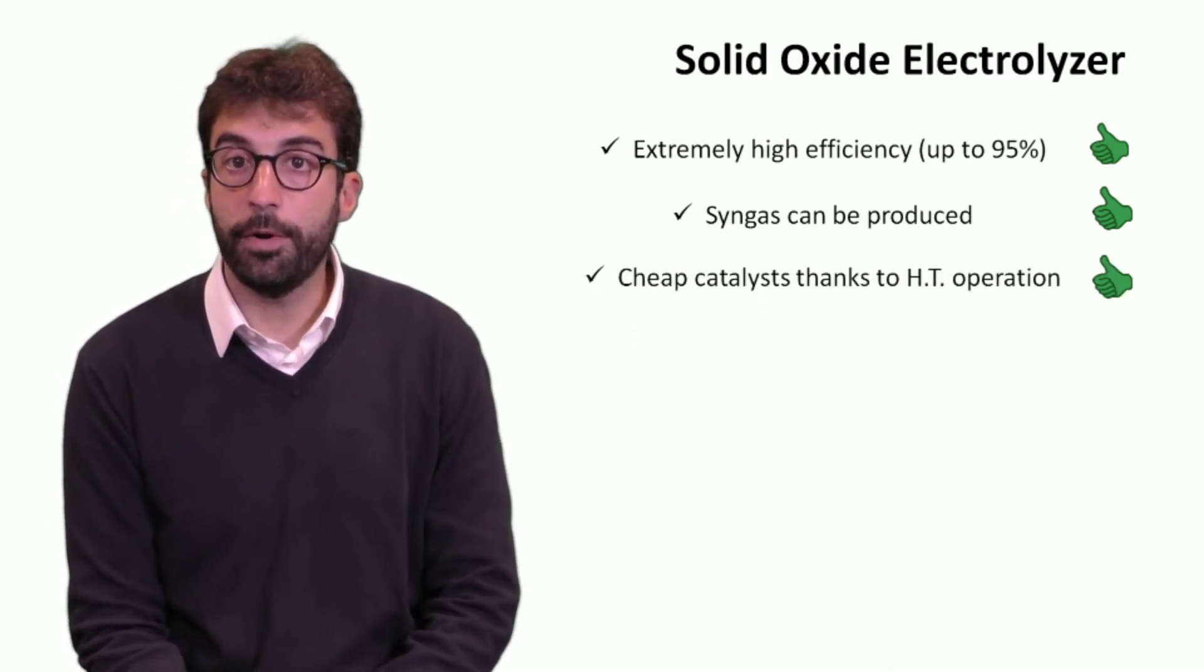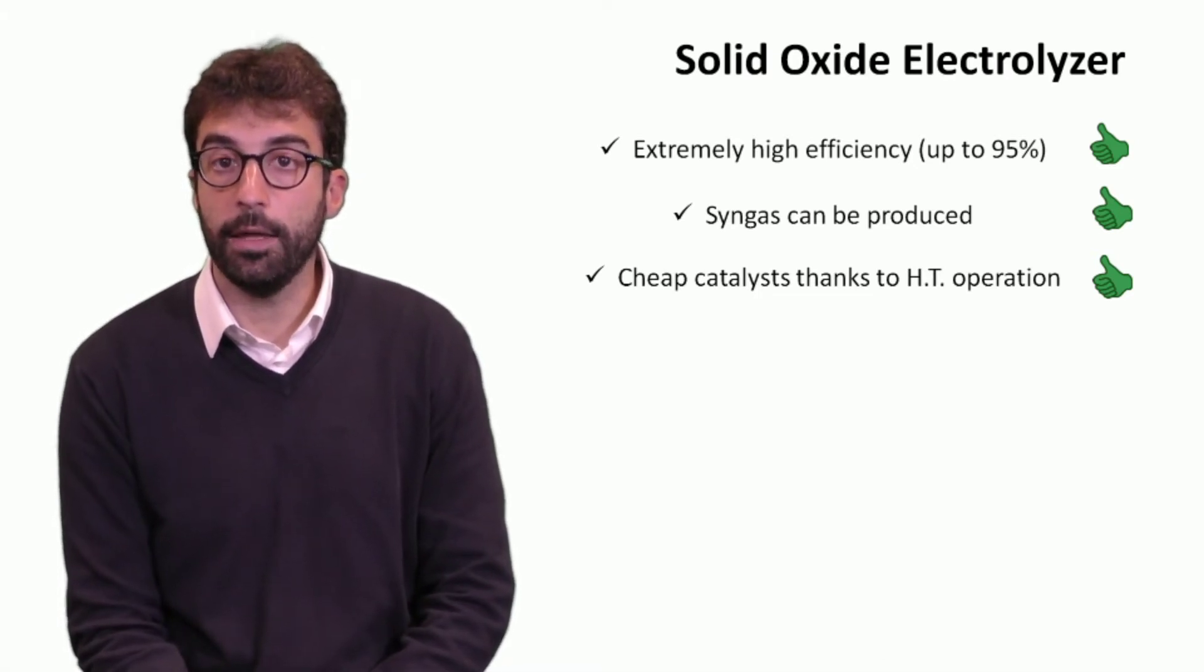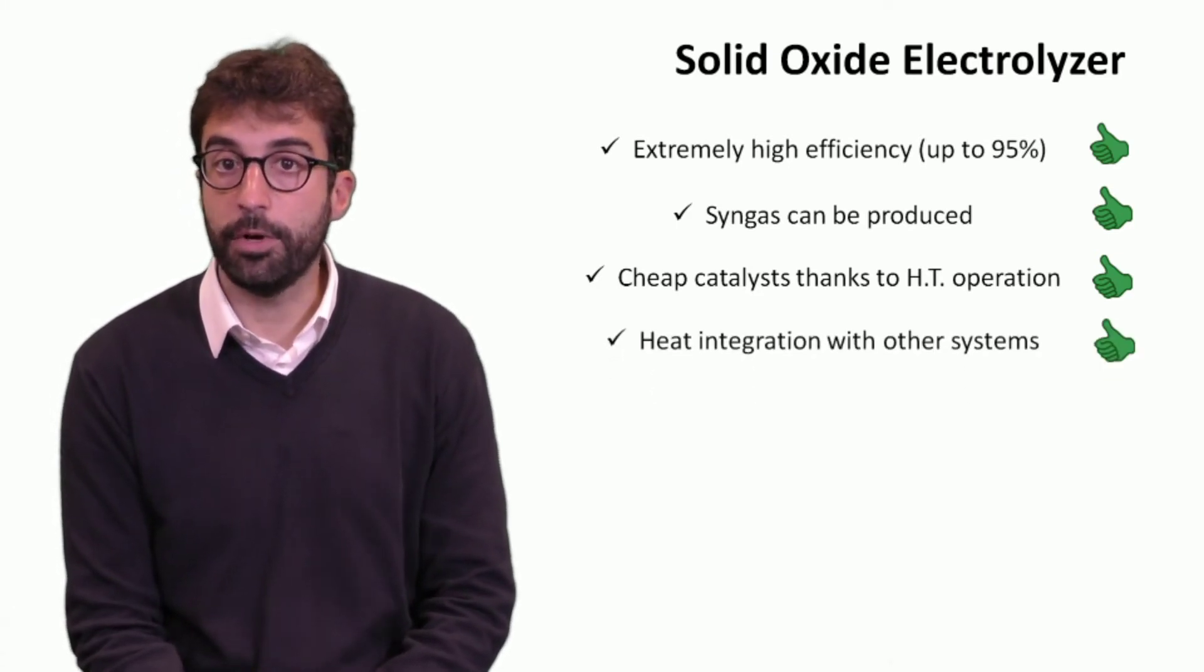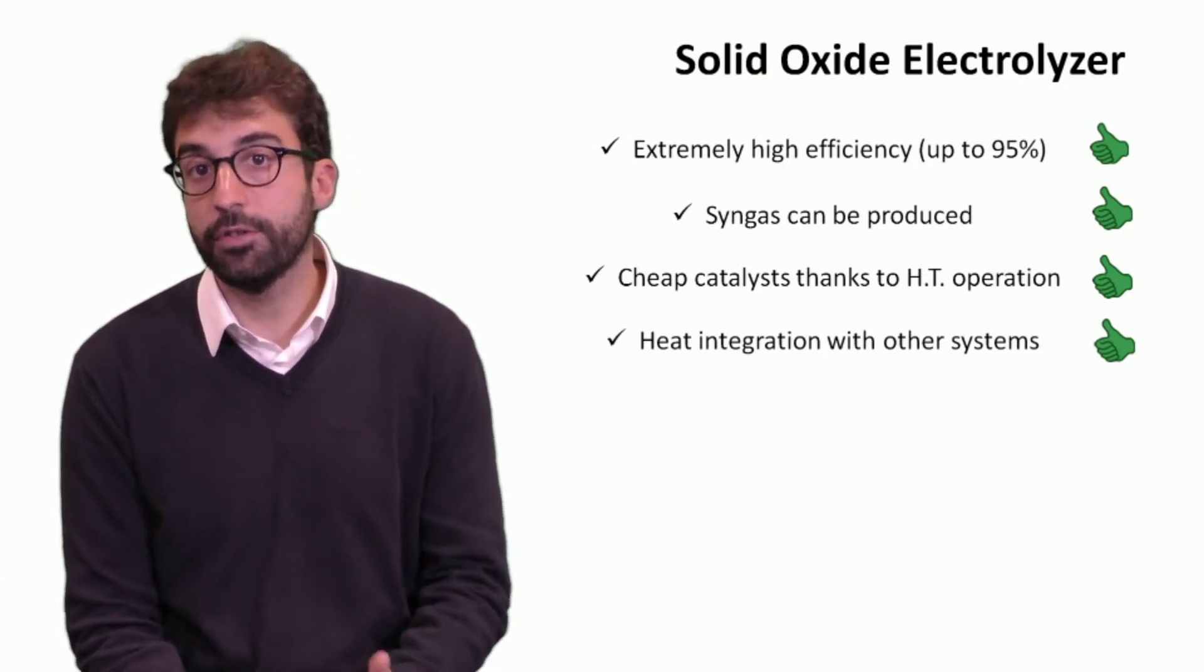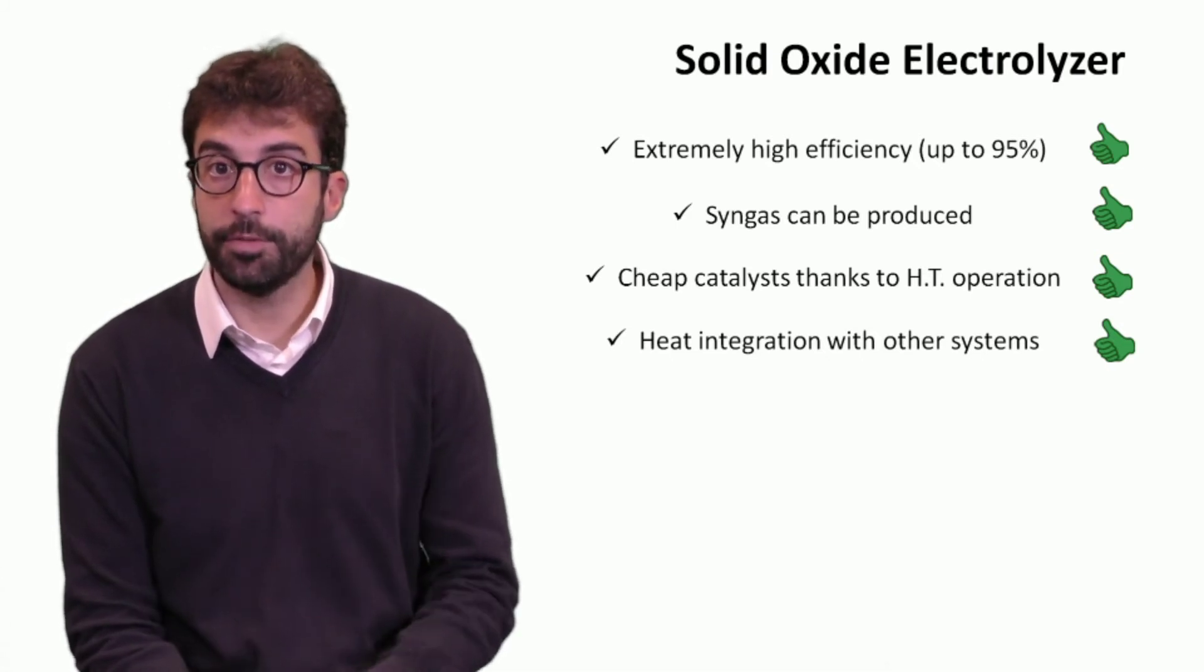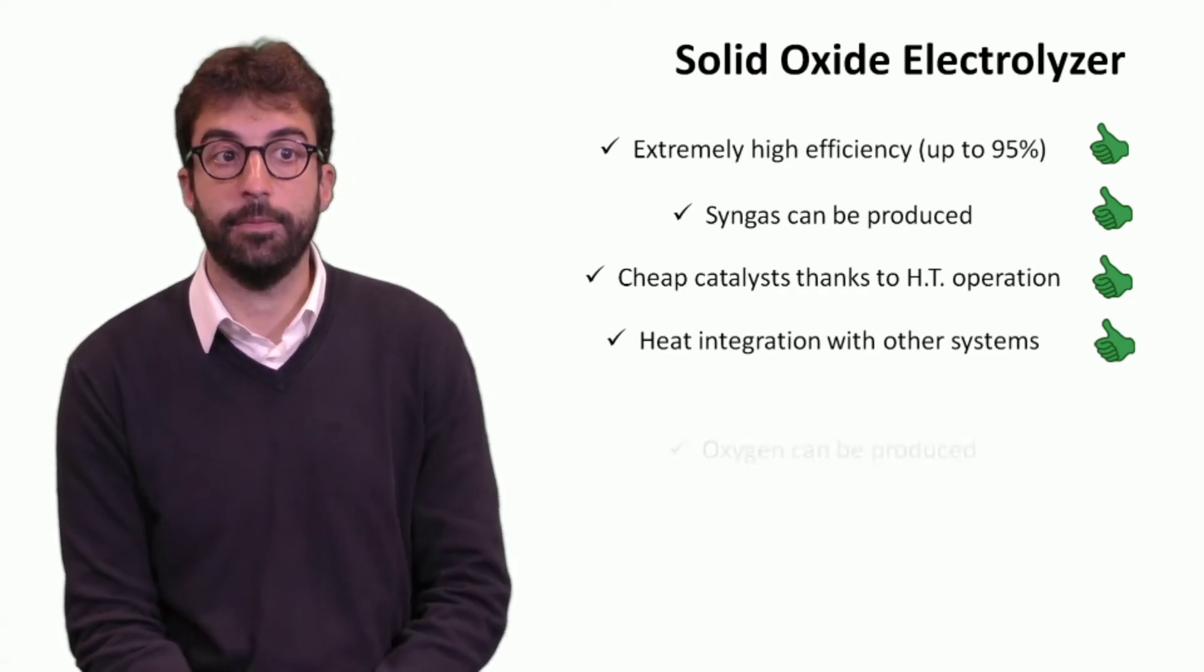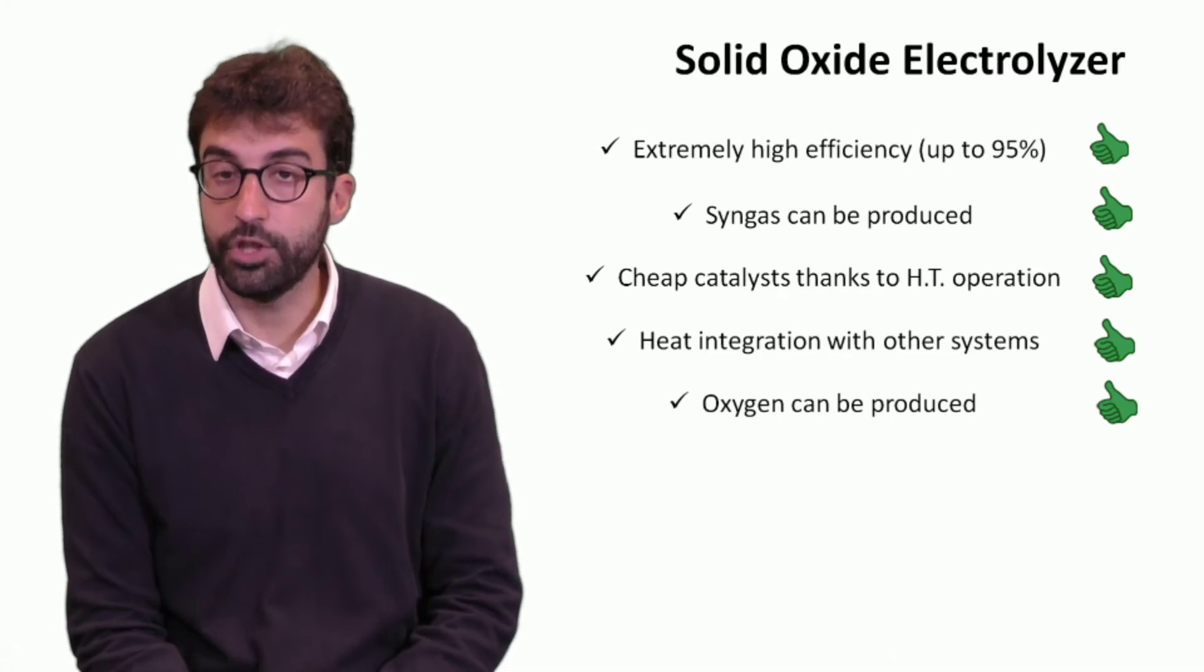Thanks to high temperature operation, we can use cheap catalysts—in this case nickel—compared to high cost catalysts of low temperature electrolyzers. Due to the operation at high temperature, we can have several solutions of heat integration with other systems. We can absorb heat to increase the efficiency or produce additional heat to integrate with other systems, and we can also produce oxygen separately.